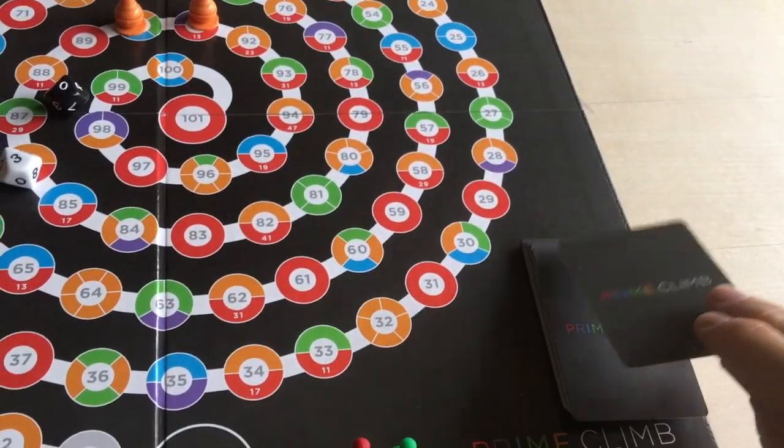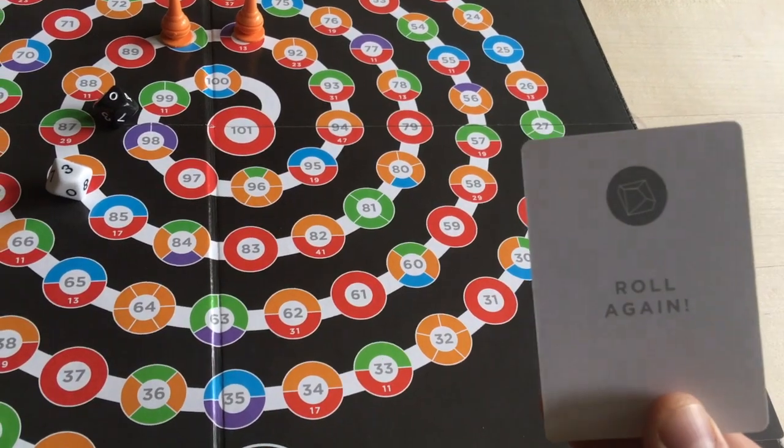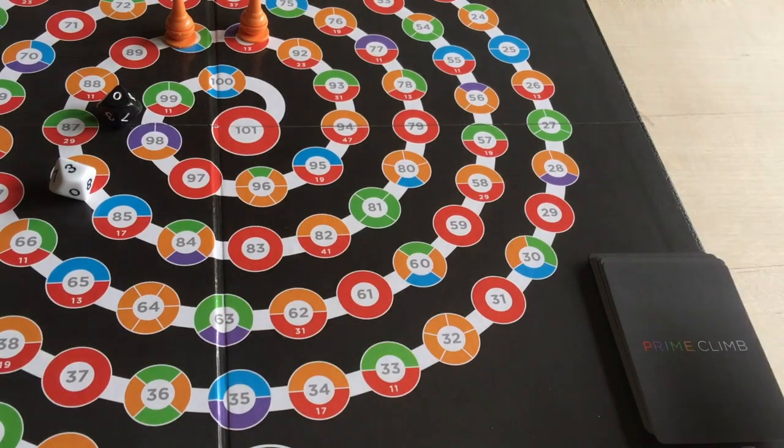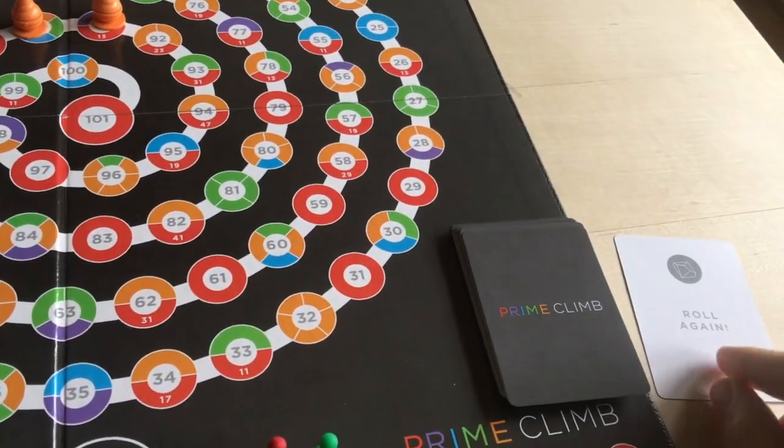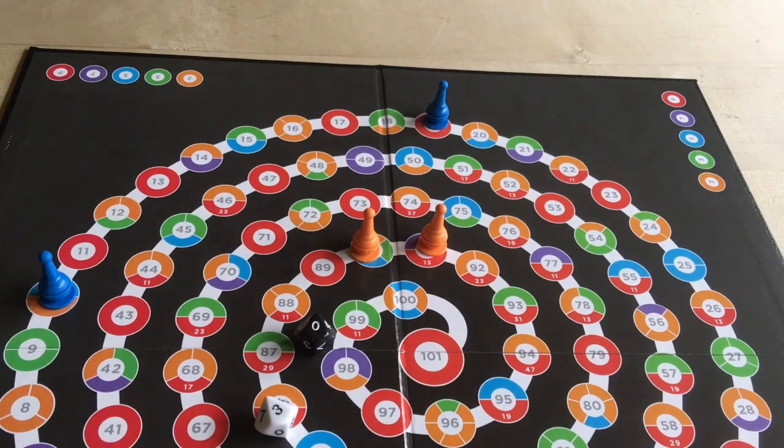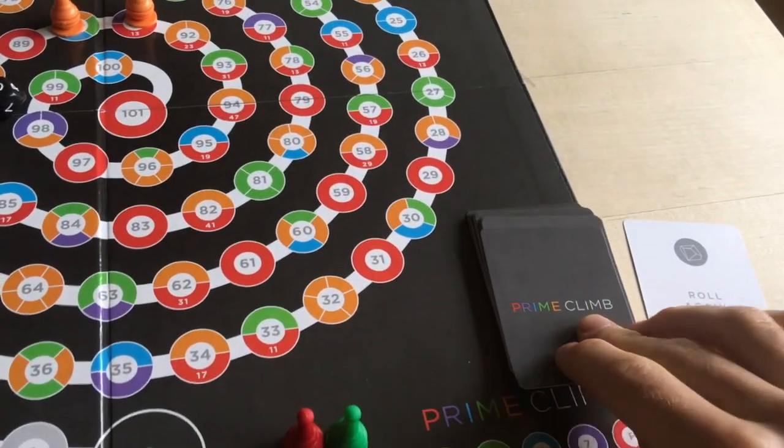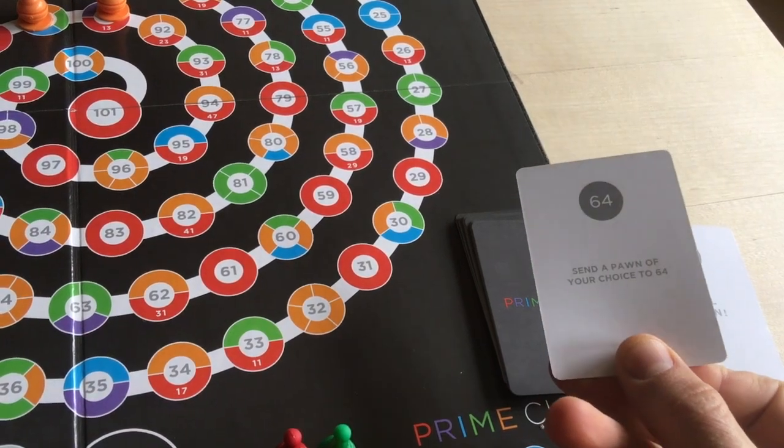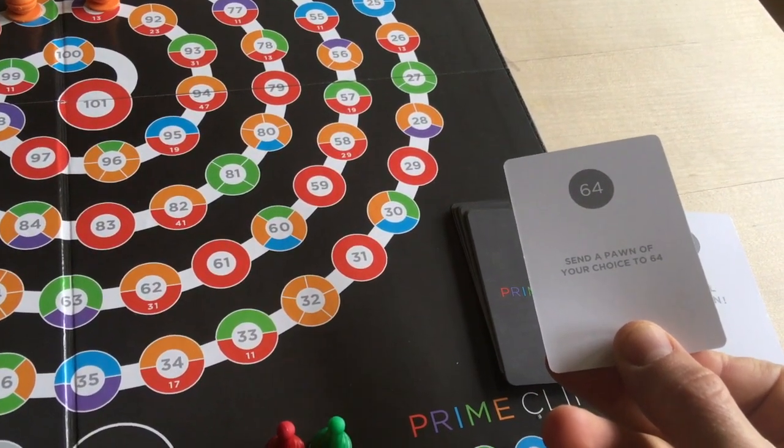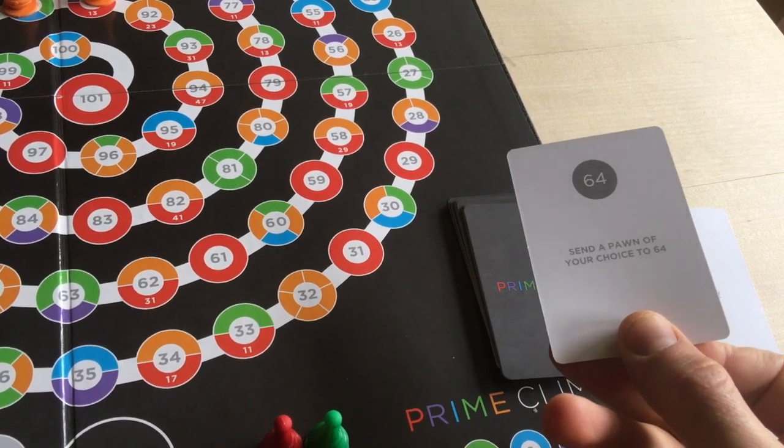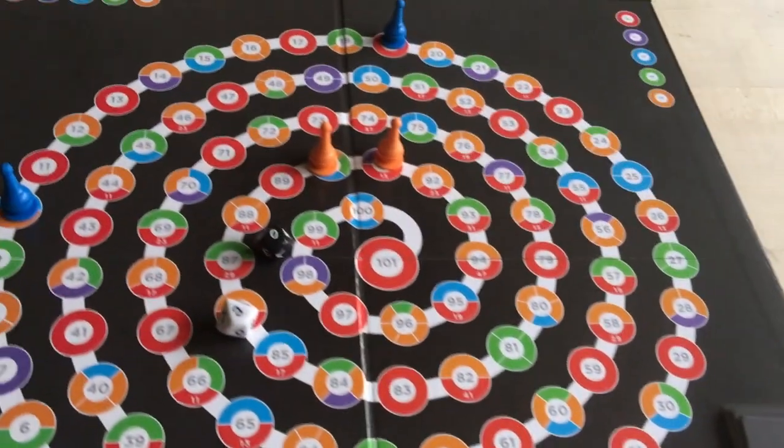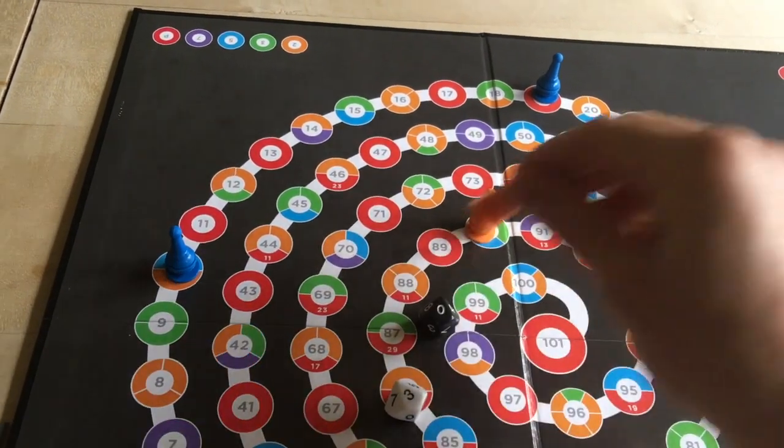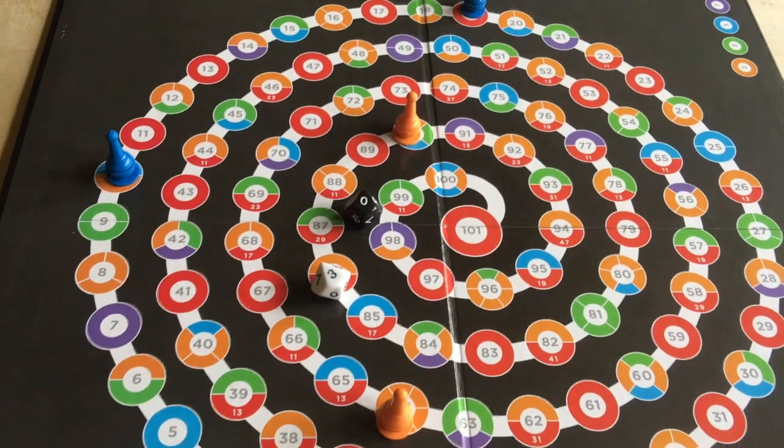The cards are things like roll again, which is an action card. It's an action you take right away. You flip these over, show everyone, and keep them face up. That would go into the discard pile, and then I would get a chance to roll again. There are other kinds of action cards that do all sorts of things. Usually they help you, sometimes they hurt you. Send a pawn of your choice to 64. That's a great way to take my opponent who's closer to 101 and send them backwards.